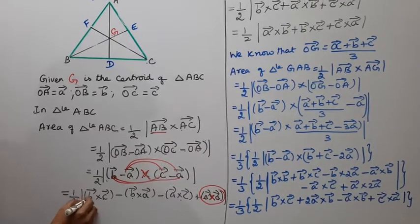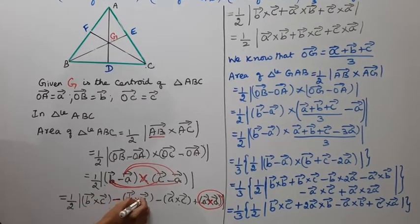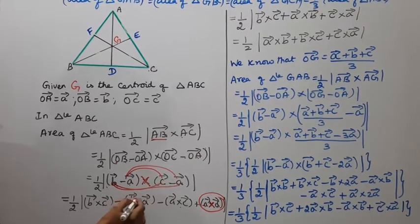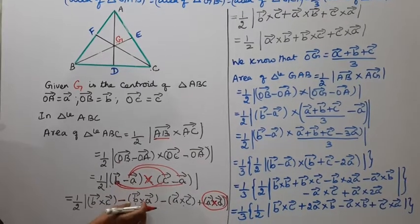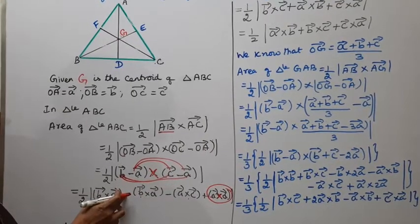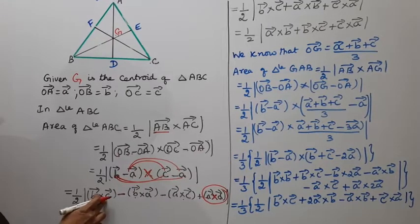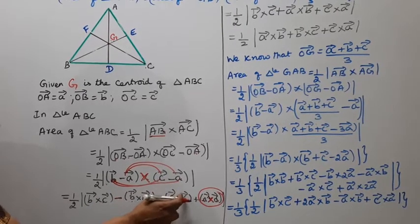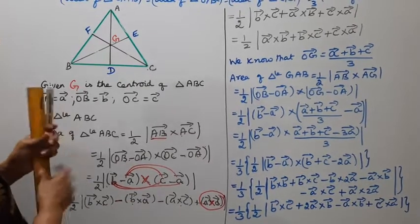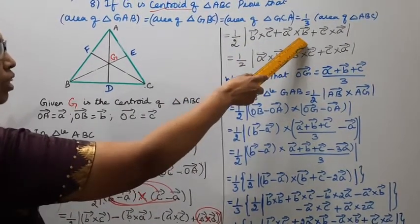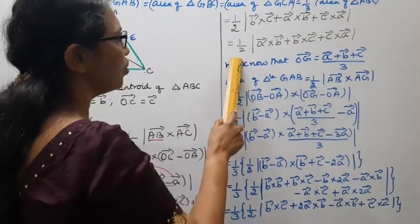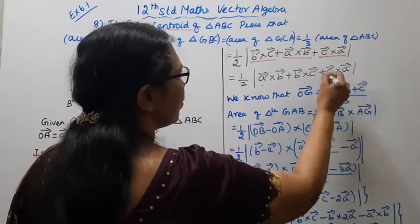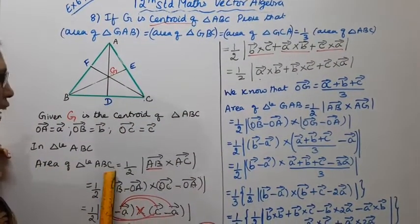Expanding: one-half into mod of B vector cross C vector, minus B vector cross A vector. Since A vector cross A vector equals zero, and minus B vector cross A vector equals plus A vector cross B vector, this simplifies further. So area of triangle ABC equals one-half mod of B vector cross C vector plus A vector cross B vector plus C vector cross A vector.